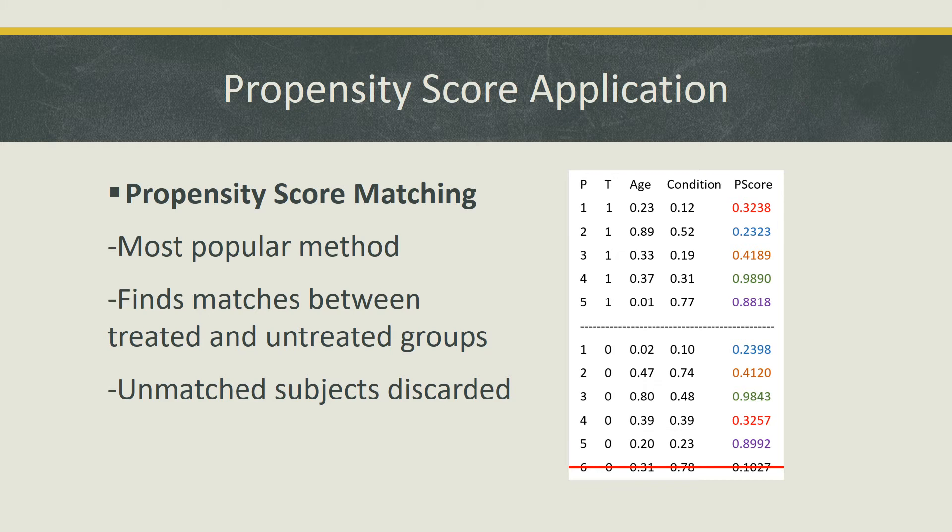In this case, we have a leftover control which was not matched. Therefore, we can discard it from our study. This was an example of one type of matching. Other methods like stratification could be used to group individuals based on propensity scores. Statistical software packages such as R can conduct a variety of matching methods using add-ons like MatchIt.